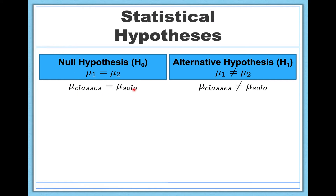The alternative hypothesis states the opposite: the mean of group one will not equal the mean of group two, meaning there will be a difference between these two averages. More specifically for our experiment, the mean anxiety level of people who work out in groups will not equal the mean anxiety level of people who work out alone. These are our statistical hypotheses.